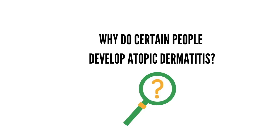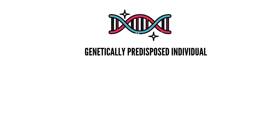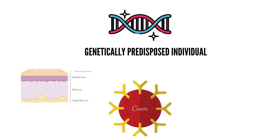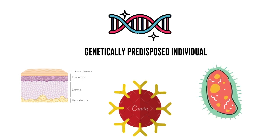A good question to start with: why do certain people develop atopic dermatitis? In a genetically predisposed person, three things play an important role in the pathogenesis of atopic dermatitis: epidermal barrier dysfunction, immune dysregulation, and altered microbiome of the skin. Out of these three, the first two are considered to be responsible for the main pathogenesis of atopic dermatitis.